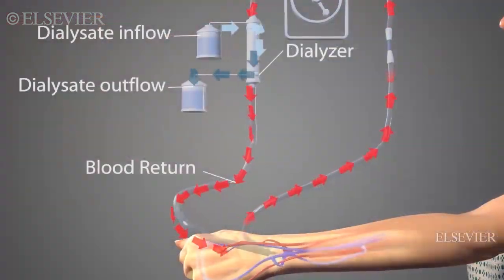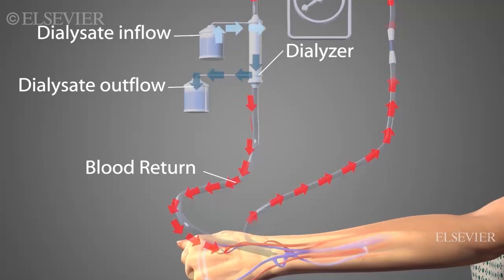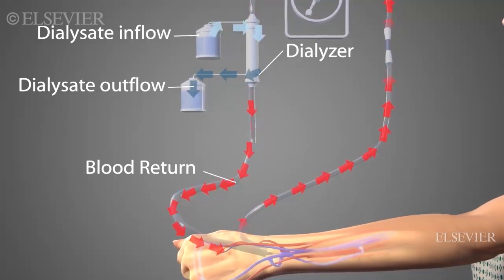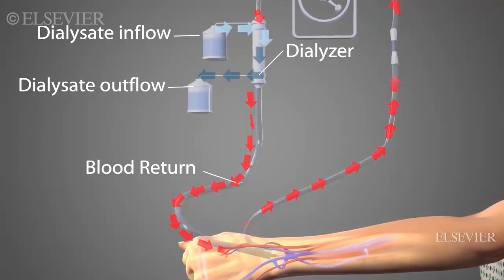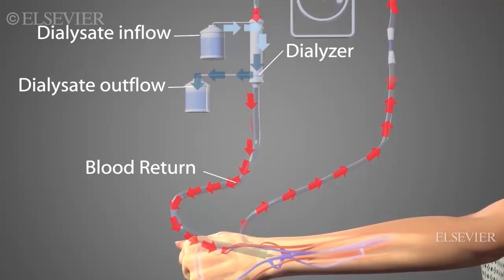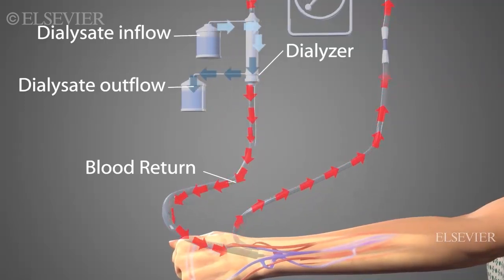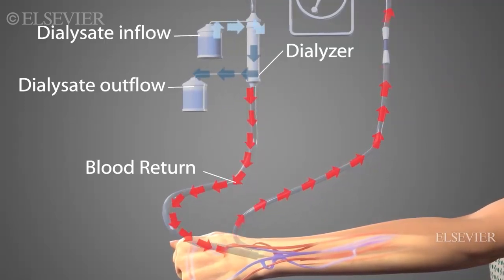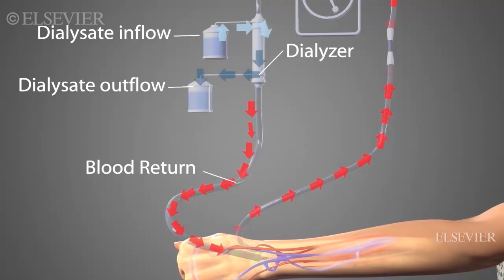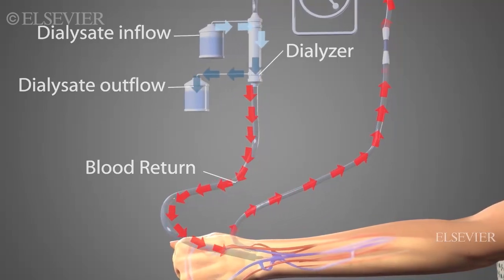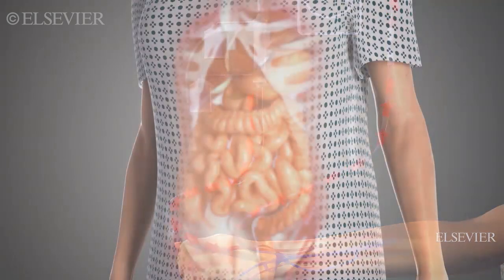Throughout hemodialysis, fresh dialysate is drawn into the dialyzer and used dialysate is drained off. At the same time, the hemodialysis machine returns the filtered or cleaned blood to the body. The needles are removed when the dialysis is complete.